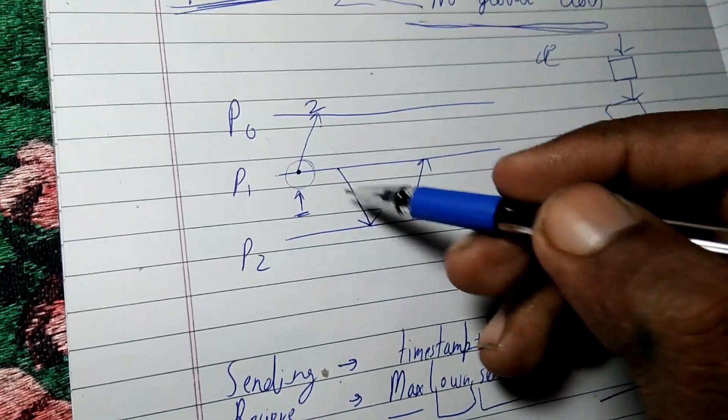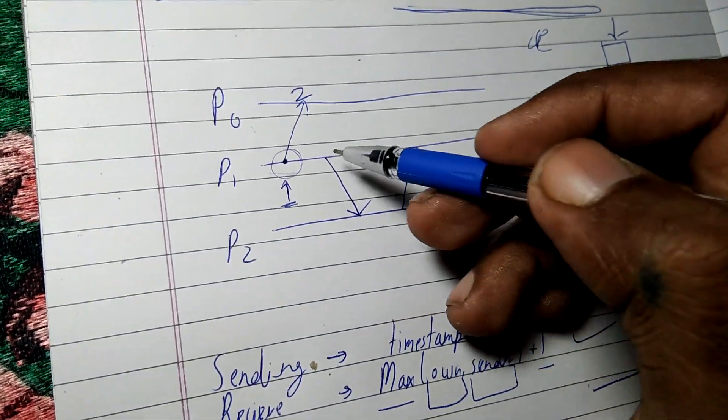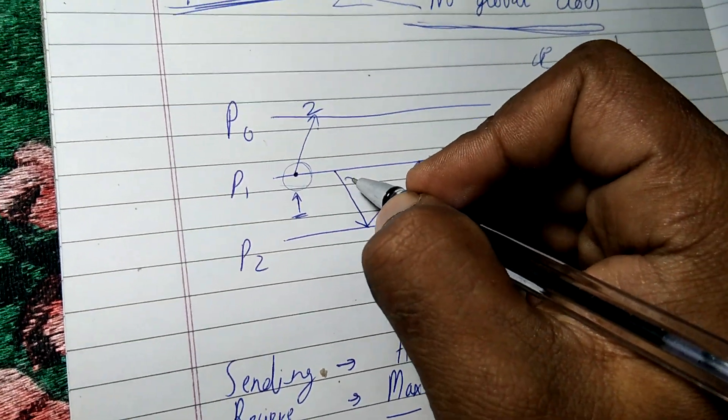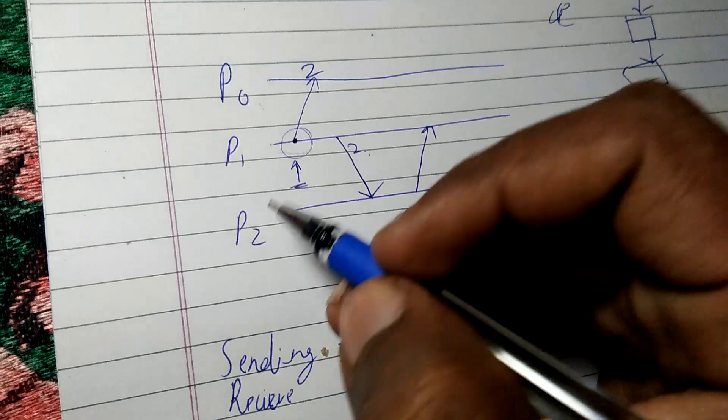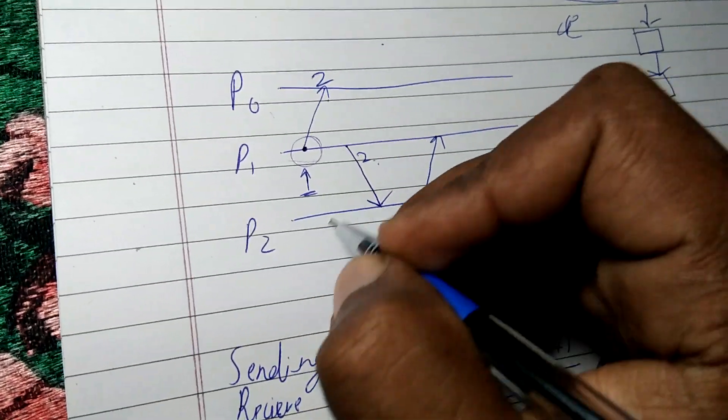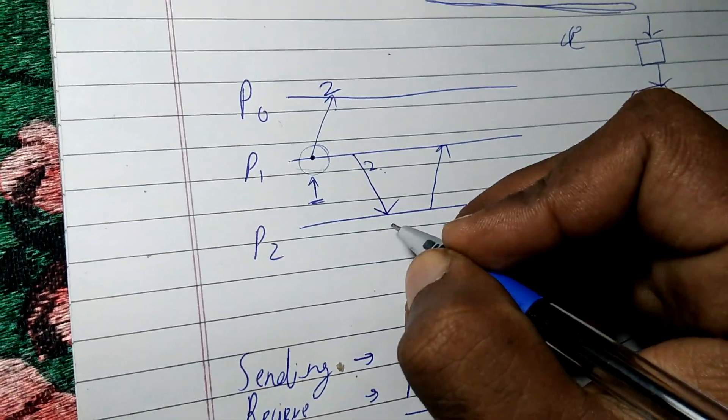Now we can see that P1 is occurring, so P1 is sending a message, so we can again add a timestamp of 2. Now we can say that P2 is receiving. P2 has its original timestamp as 0, so now it will have...